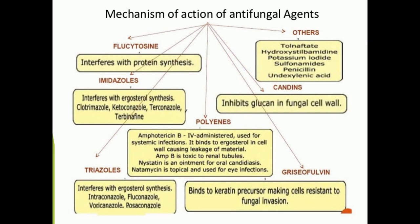As discussed in a previous lecture, we covered topical and systemic antifungal agents. Another class is polyenes, shown in the center. This includes amphotericin B, administered for systemic infections — it binds to ergosterol in the cell membrane causing leakage of cellular material. Amphotericin B is toxic to renal tubules, while nystatin is used for oral candidiasis, trichomoniasis, and more.